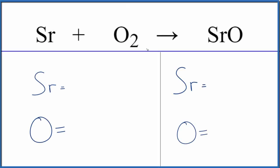In this video, we'll balance the combination, also called synthesis reaction, of Sr plus O2 gives us SrO. This is strontium plus oxygen gas. This is strontium oxide.